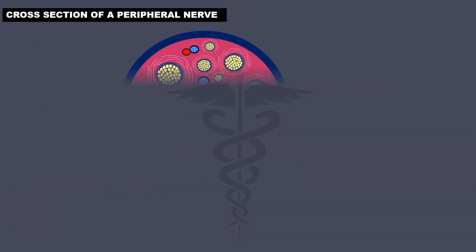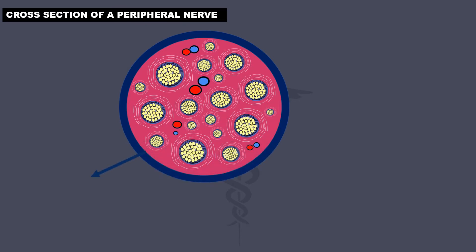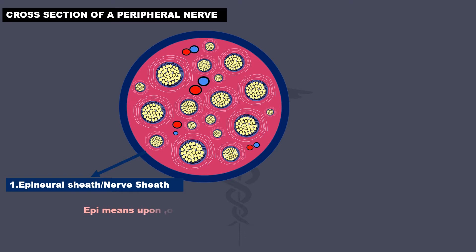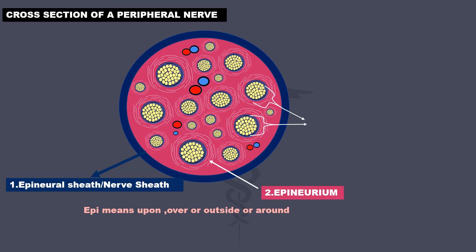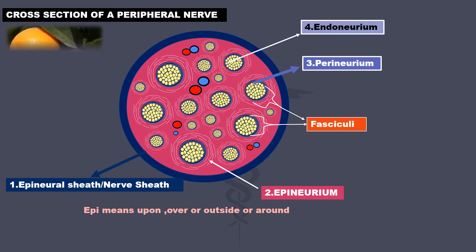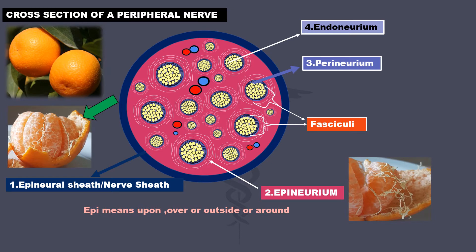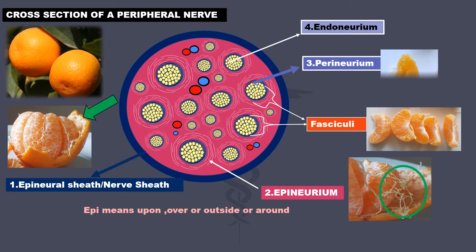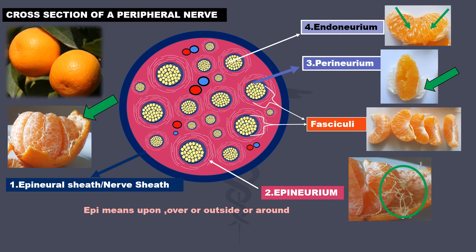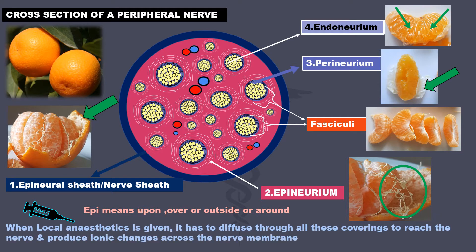These layers can be seen in a cross-section of the peripheral nerve. Outermost is the epineural sheath or the nerve sheath — 'epi' means upon, that is over, outside, or around the nerve. Then comes the epineurium, fasciculi surrounded by perineurium, and each axon surrounded by endoneurium. To make this easy, we can compare this with different layers of an orange: the orange peel, the fibers, the segments, their peel, and the tiny juicy sacs inside. When local anesthetics are given, they must diffuse through all these coverings or layers to reach the nerve and produce ionic changes across the nerve membrane.